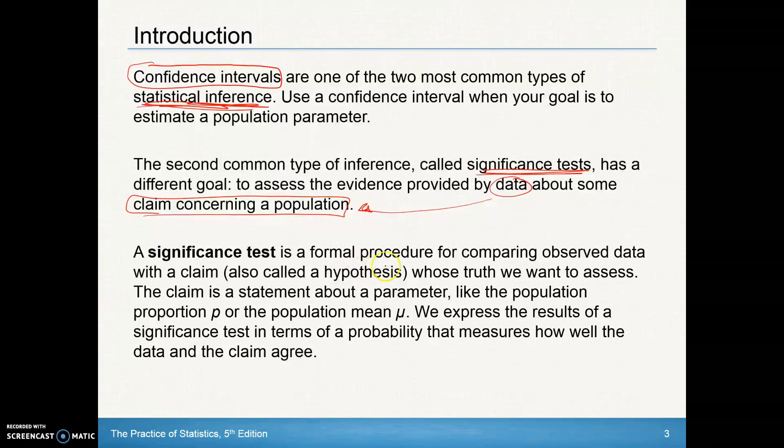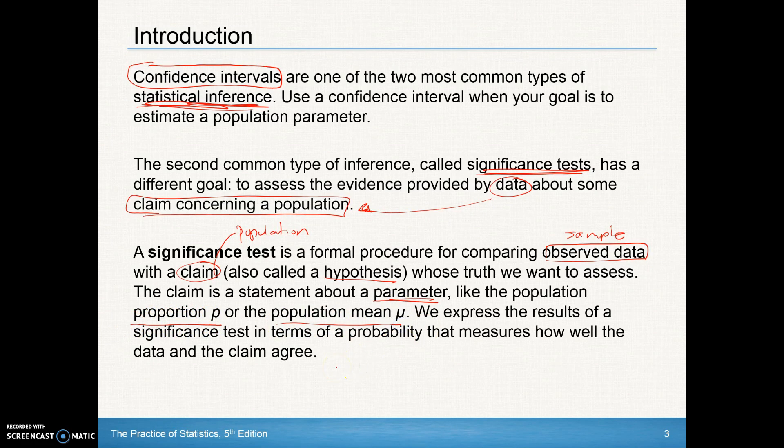A significance test is a formal procedure for comparing observed data, or sample data that we collect, with a claim about a population, also called a hypothesis. The claim is a statement about a parameter, like the population proportion p or the population mean mu. We express the results of a significance test in terms of a probability that measures how well the data and the claim agree - in other words, how well the sample and the population agree with each other.